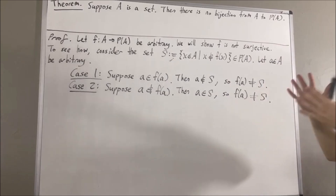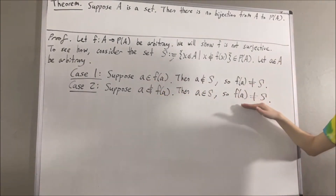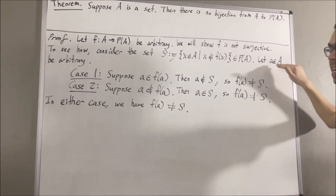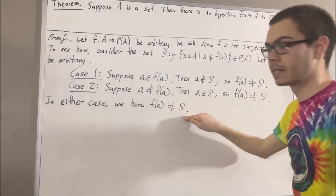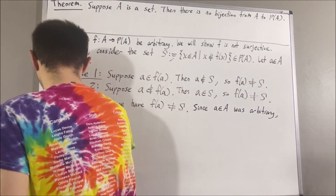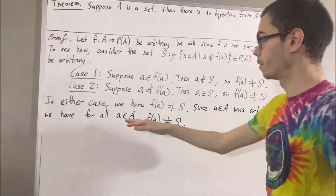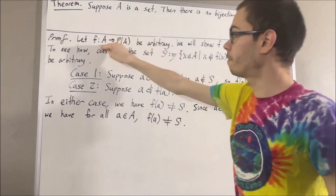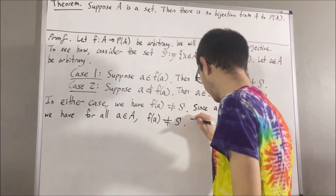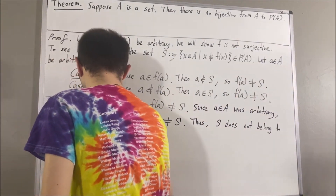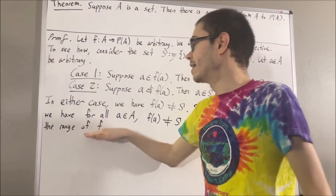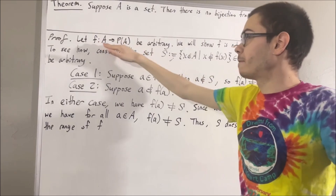So we're done. In either case, we have that F(a) is not equal to S. Putting this all together, given an arbitrary element a in A, we have that F(a) is not equal to S. Since a was arbitrary, this means we have shown for all a in A, F(a) is not equal to S. In other words, if we take any element of A and send it into the function F, its output value will not be S. Therefore, S is not an element of the range of F. So we have found an element of the power set of A that does not belong to the range of F, meaning the range of F is not all of the power set of A, and that shows that F is not surjective.